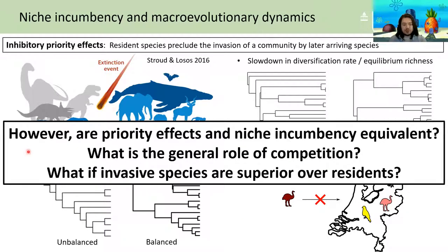However, this begs the question if priority effects are actually equivalent to niche incumbency, or if there are alternative processes that could result in these same patterns. For instance, is there not a more general competition? Or what if we take a look from the point of view of contemporary invasion ecology, where invasive species are actually superior over resident species?